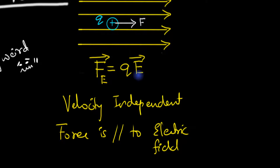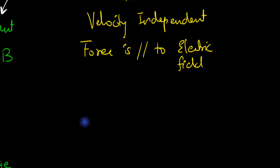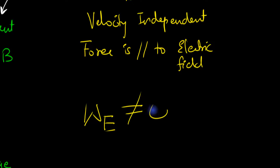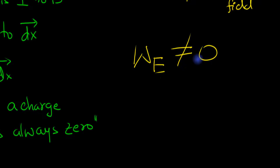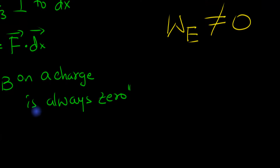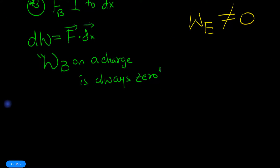Electric fields have nothing to do with velocity, so they can act at any angle — they are not necessarily perpendicular to displacement. In general, the electric force does work, so the work done by the electric force on a charged particle is not zero. This is so important because since the electric force does work, it can change the speed of a charged particle — that's the whole idea behind electric potential.